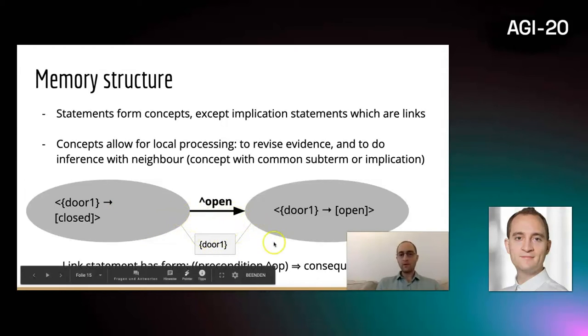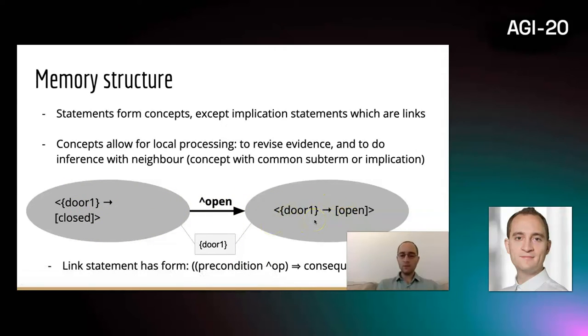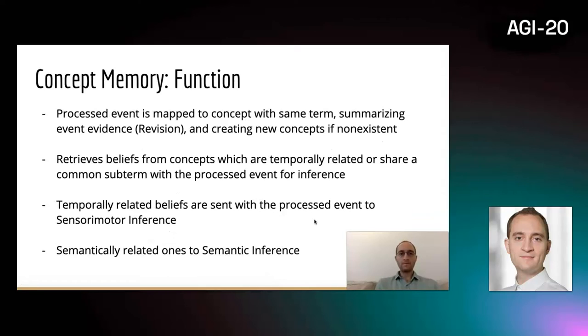The implication links can encode a statement like a precondition. It's the precondition, this is the operation, and this leads to the following consequence. Overall, the concept memory serves multiple functions. It processes events to map them to concepts of same term, summarizes event evidence via revision, and creates new concepts if they do not exist yet.